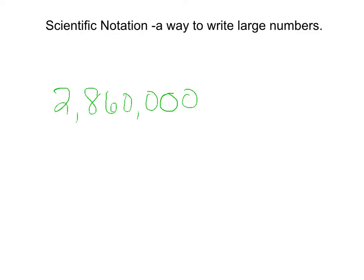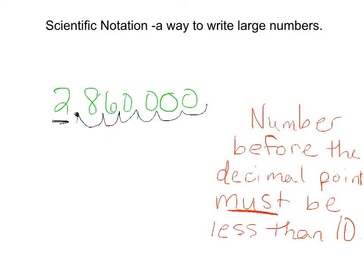By taking our decimal point, which is here after the ones place, and moving it over until we have a number in the front that's less than 10. The number before the decimal point must be less than 10. This number is 2, so we are fine.